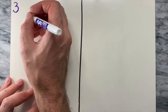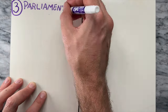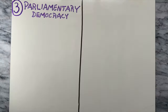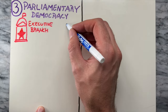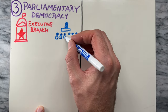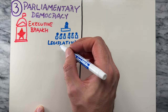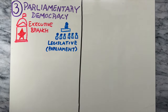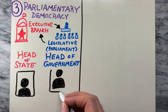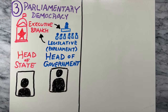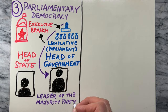Then there's parliamentary democracy. In parliamentary democracy, the executive branch derives its legitimacy from and is accountable to the legislature or parliament. The head of state and head of government are often separate roles, with the latter typically being the leader of the majority party in parliament.